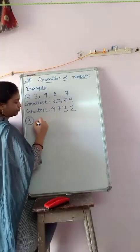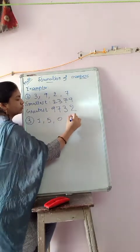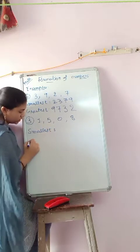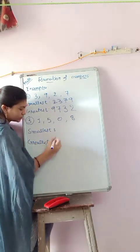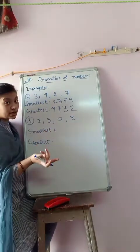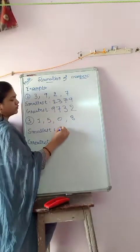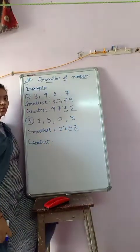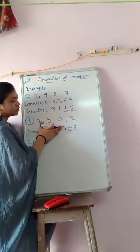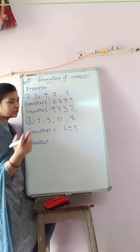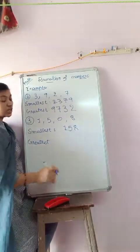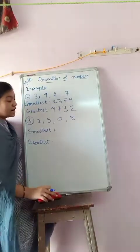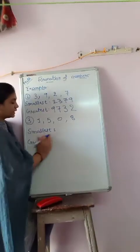Third example. Digits: 1, 5, 0, 8. Smallest and greatest four-digit number. For the smallest, 0 is the smallest digit, but remember: never write 0 first when creating the smallest number, because then it becomes a 3-digit number. So whenever there is a 0, do not place it in the first position.